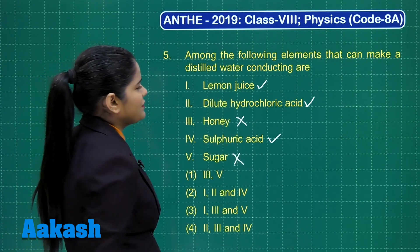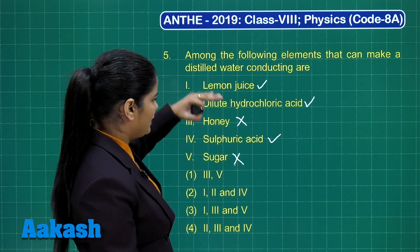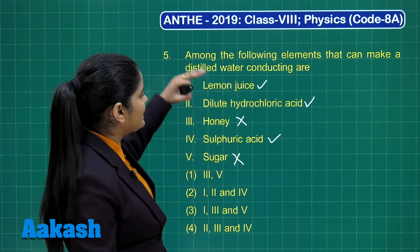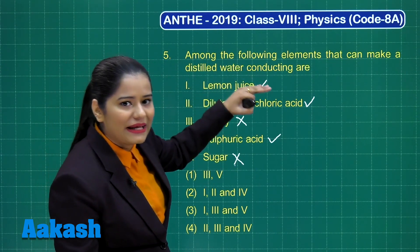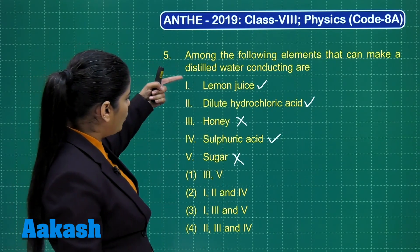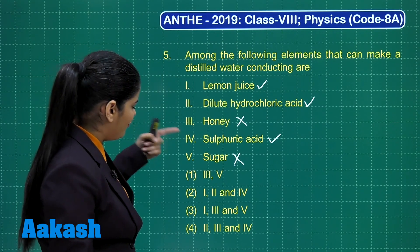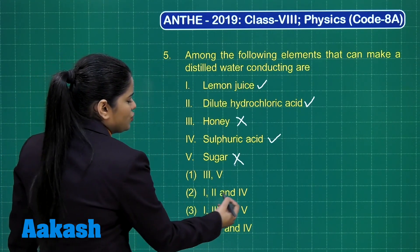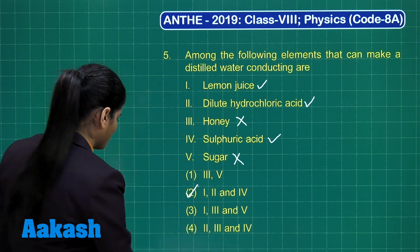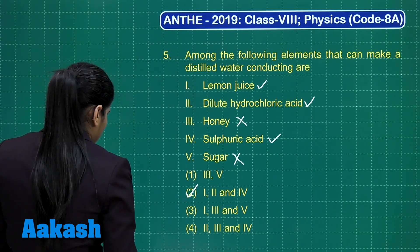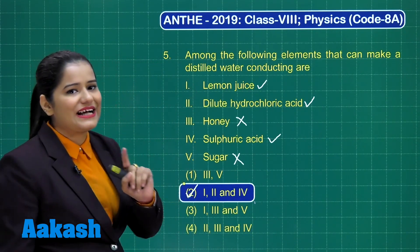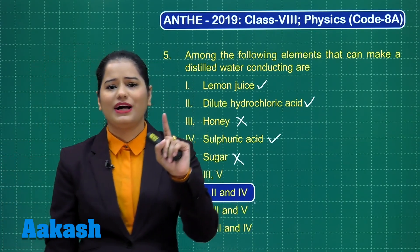Out of all the given substances, if you add lemon juice, hydrochloric acid, or sulfuric acid, then only the distilled water will be made conducting. Which option is the correct option? That will be 1, 2, and 4. The addition of 1, 2, and 4 is going to make distilled water conducting, and hence option 2 is the correct option. The correct answer to this question is option number 2.